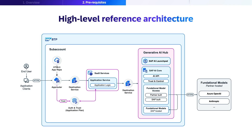Let's examine the high-level reference architecture for accessing generative AI models through SAP BTP. This diagram shows the complete flow from end users to foundational models. Starting from the left, we see end users and application clients connecting via HTTPS to the SAP BTP environment. Within the subaccount, the request first passes through an app router to an HTML5 app repository. The request then flows to a destination service, which directs it to the service containing the application service with the core application logic.